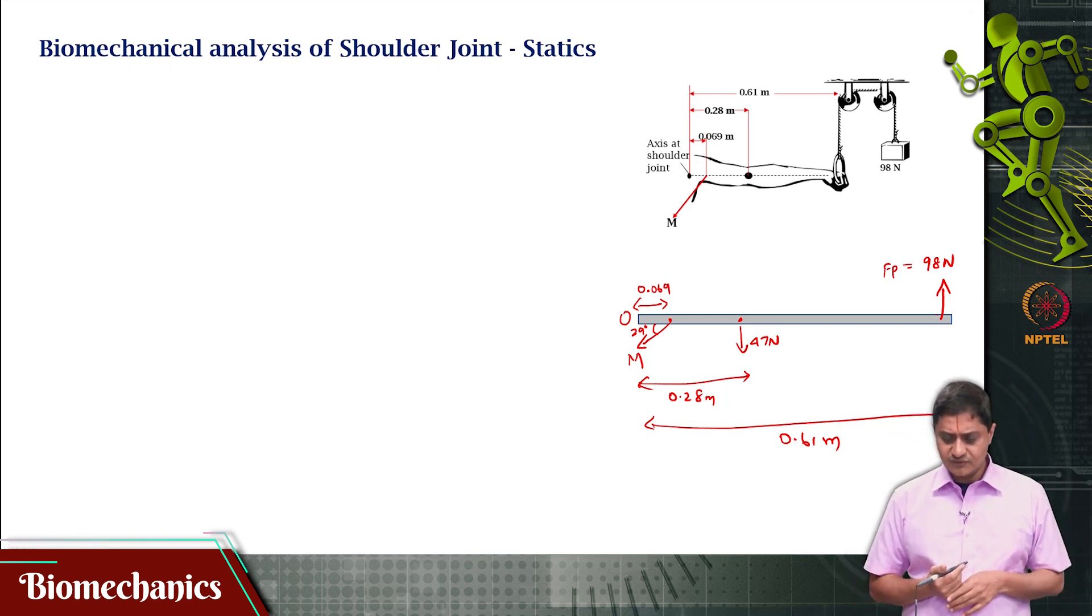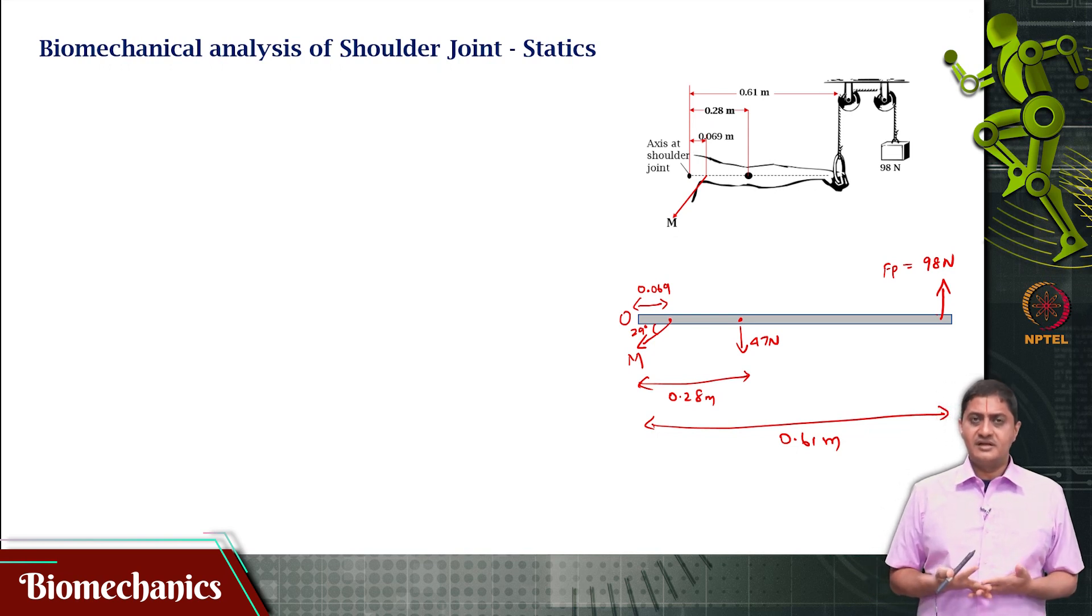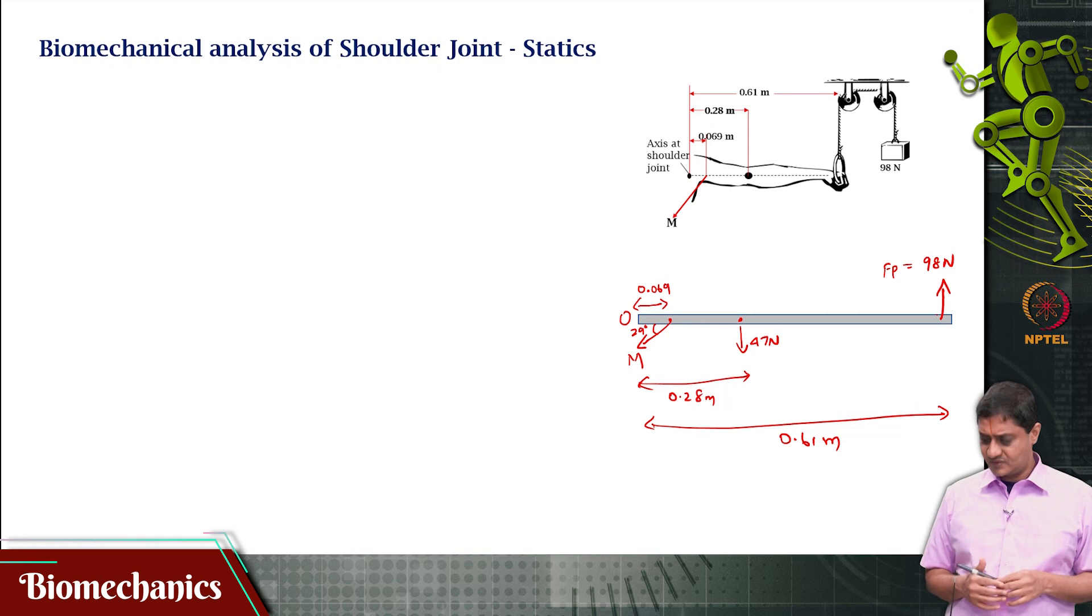Are there any other forces or distances that we will have to mark? There are only these three. There is the mass of the entire arm, there is the external load and then there is the force that is produced by the muscle. These are all the forces that are there.